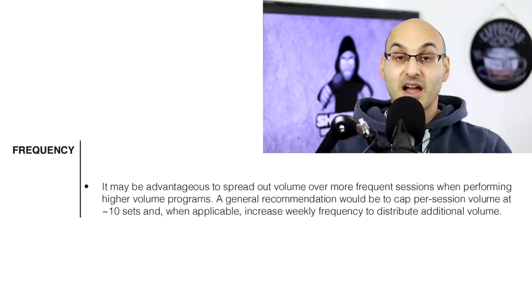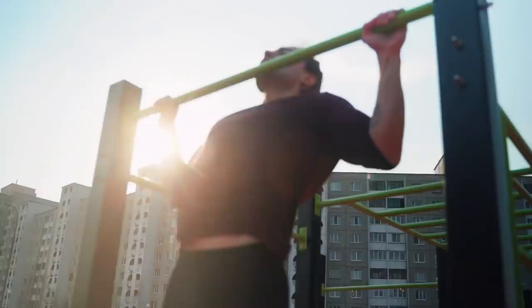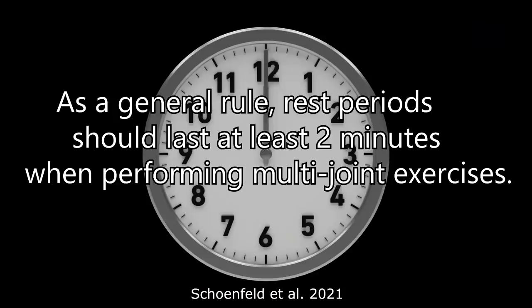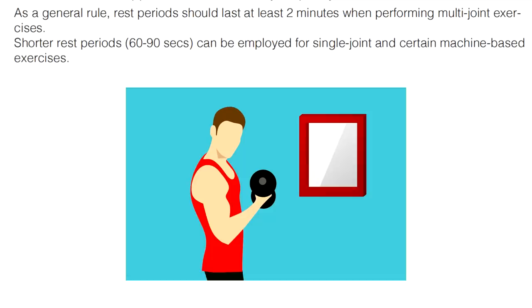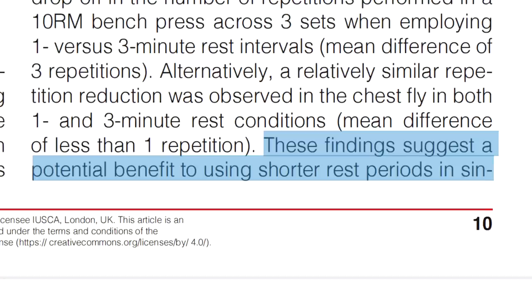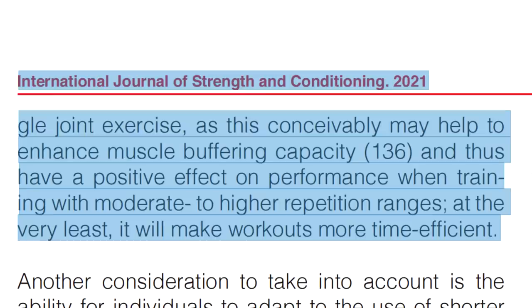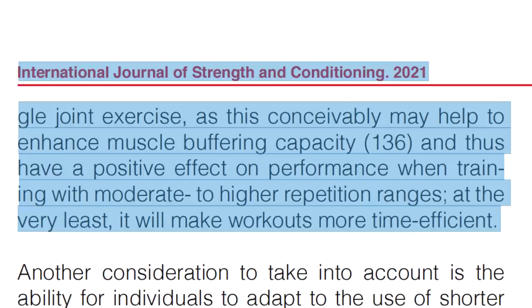Rest intervals are often overlooked but are absolutely vital for how effectively you can perform in your sets. As a general rule, rest periods should last at least two minutes when performing multi-joint exercises. Shorter rest periods — 60 to 90 seconds — can be employed for single-joint and certain machine-based exercises. Shorter rest periods for single-joint exercises may help enhance muscle buffering capacity, positively affecting performance with moderate to higher rep ranges, and at the very least will make workouts more time efficient.